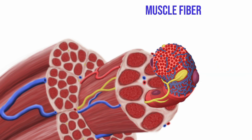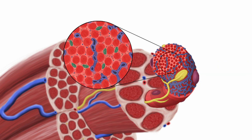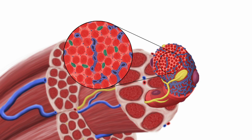Inside the cell are the myofibrils surrounded by the sarcoplasm. Within the sarcoplasm are glycogen stores called glycosomes and myoglobin responsible for oxygenating the cell, as well as large amounts of mitochondria that make the ATP necessary for contraction.